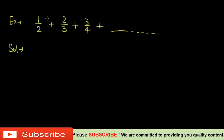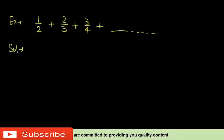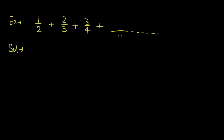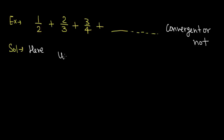For example, consider the infinite series 1/2 + 2/3 + 3/4 + so on. To find whether this series is convergent or not, we first find the nth term. The numerator follows 1, 2, 3, ..., n, so the numerator of uₙ is n, and the denominator is n + 1. So the nth term of this series is uₙ = n/(n+1).